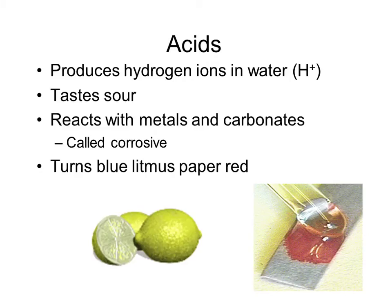We have one last classification of matter to talk about. We've talked about states of matter, elements, compounds, and mixtures — just the way that atoms arrange themselves. Finally, we're going to talk about how atoms react, and this can determine whether they would be considered an acid, a base, or something neutral called a salt. Today we're focusing on just acids and bases — some brief characteristics of both, and then a few examples of how you might see them in everyday life.